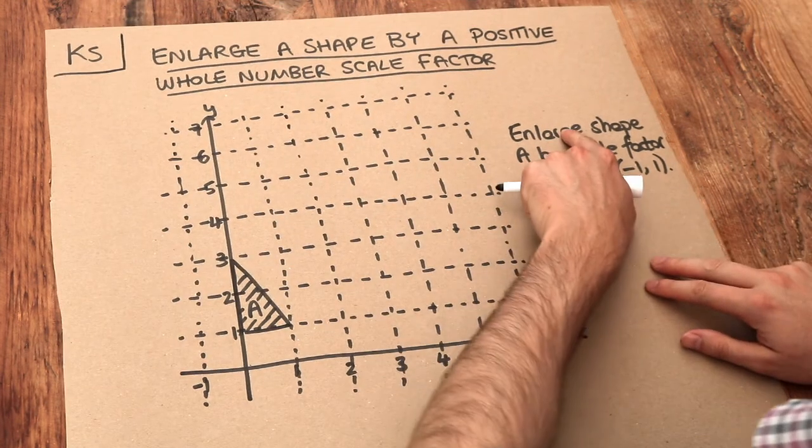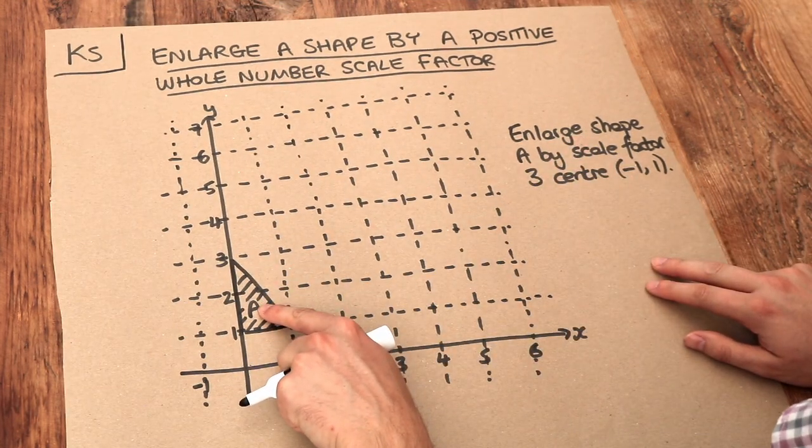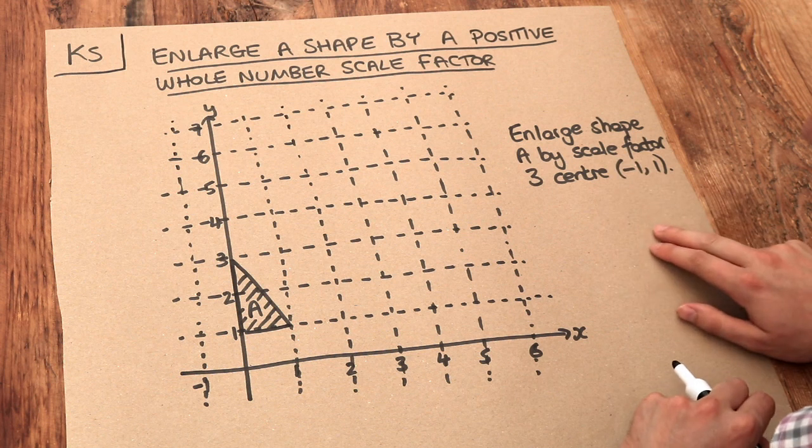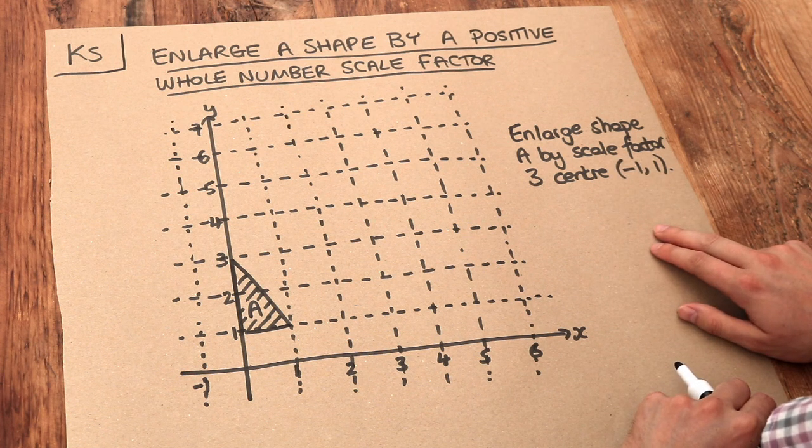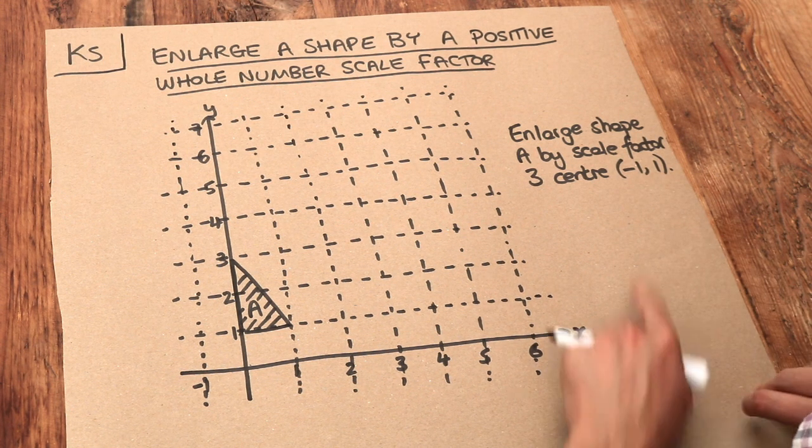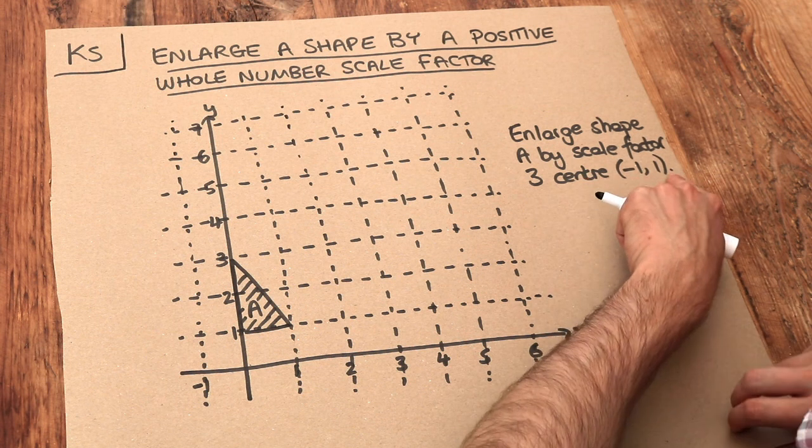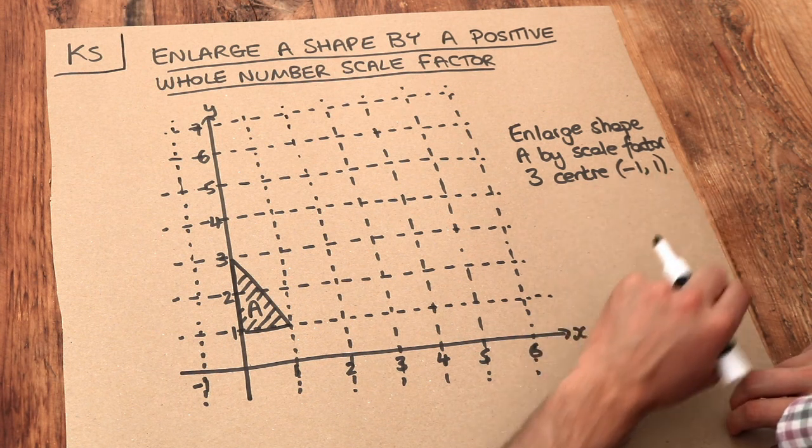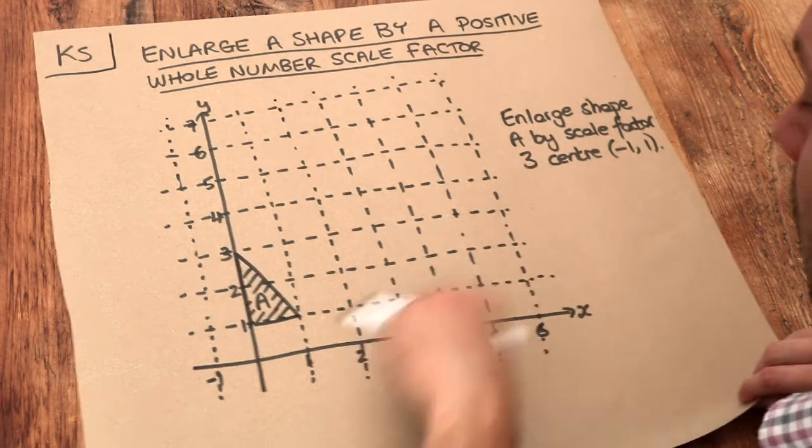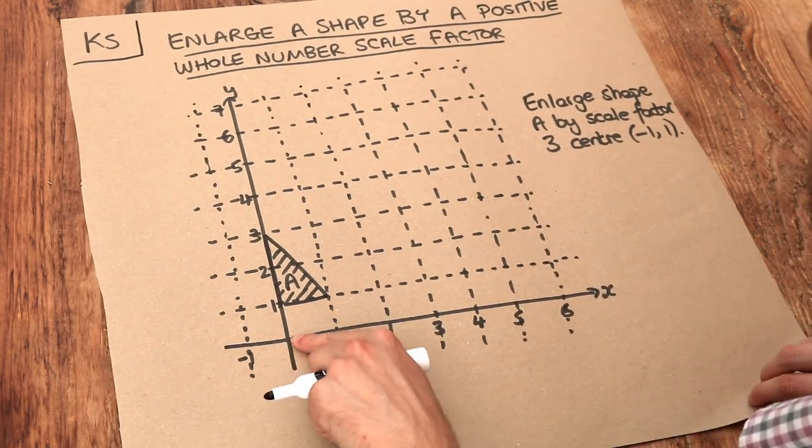Now we want to enlarge this shape A here by a scale factor of three about the centre minus 1, 1. The first thing I do is make sure that your centre of minus 1, 1, and I'll explain what is meant by the centre of enlargement in a second, let's actually plot that point on the axis.